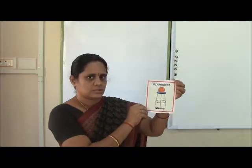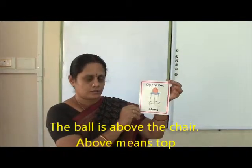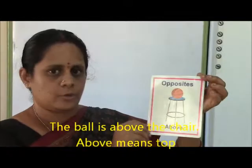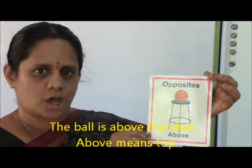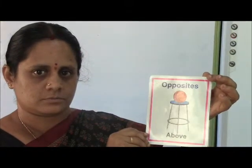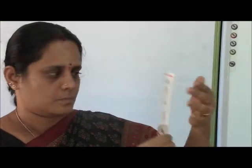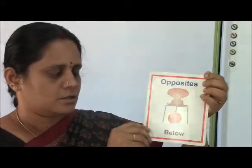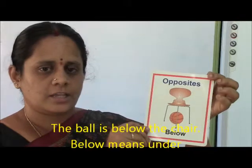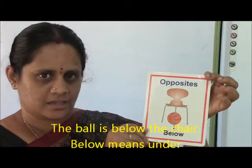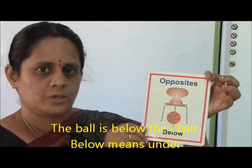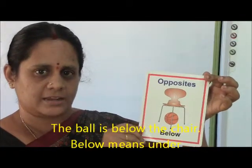The ball is above the chair. Above means top. The ball is below the chair. Below means under.